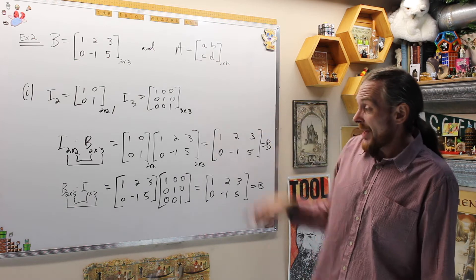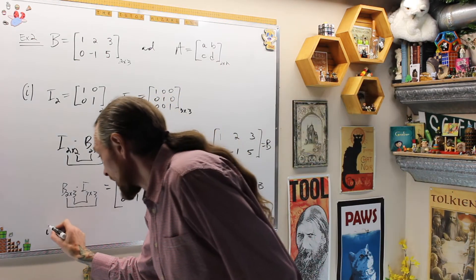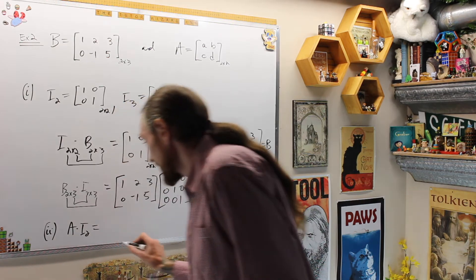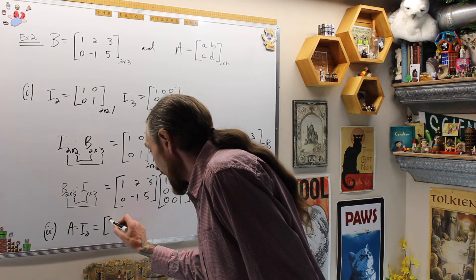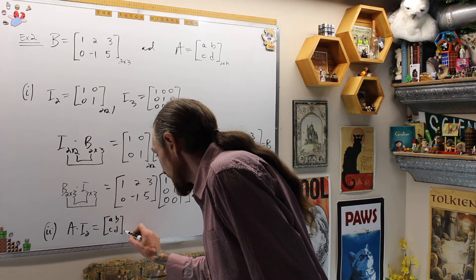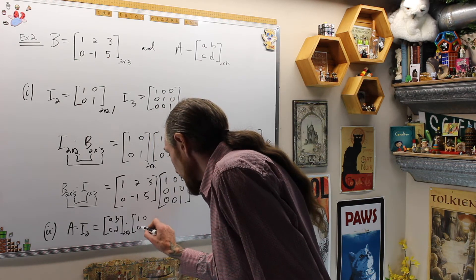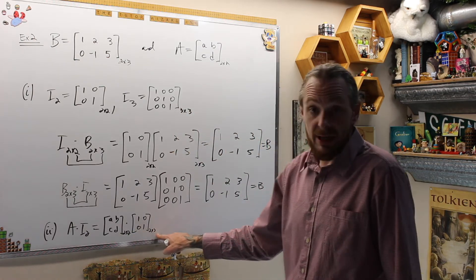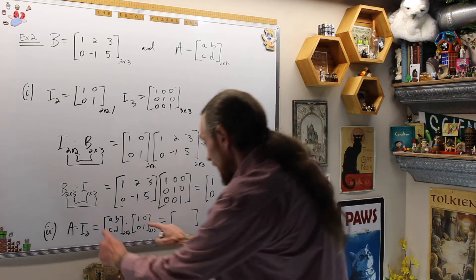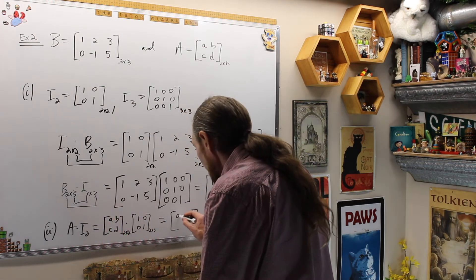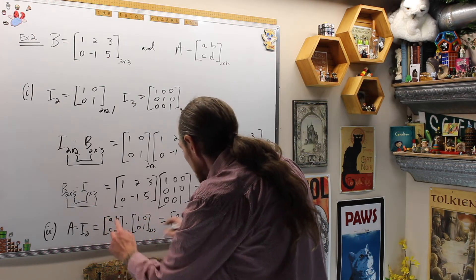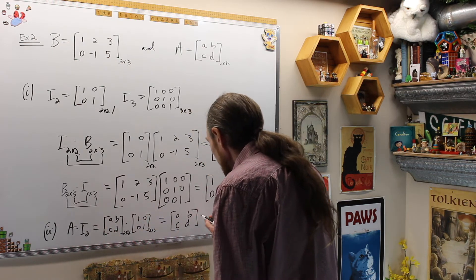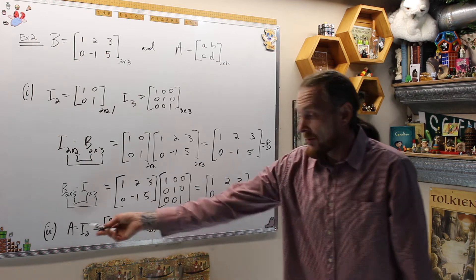When we try this with the square matrix — A times I2 — that is [a,b;c,d] times [1,0;0,1], both 2 by 2, the inside indices match and the outcome will be 2 by 2. We get a+0=a, 0+b=b, c+0=c, 0+d=d, which is A of course. You can try it the other way too.